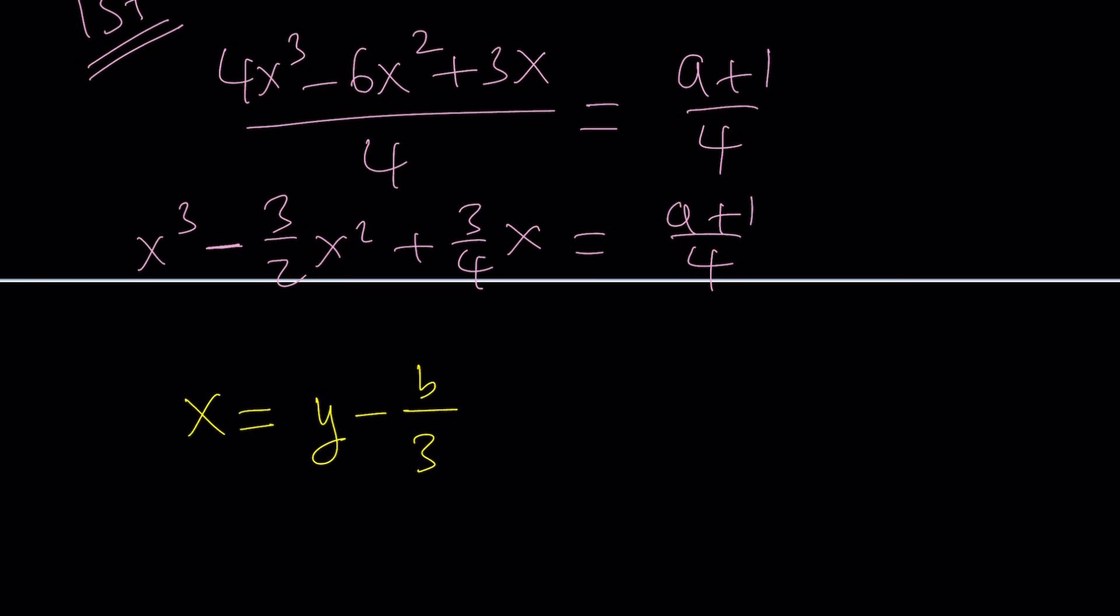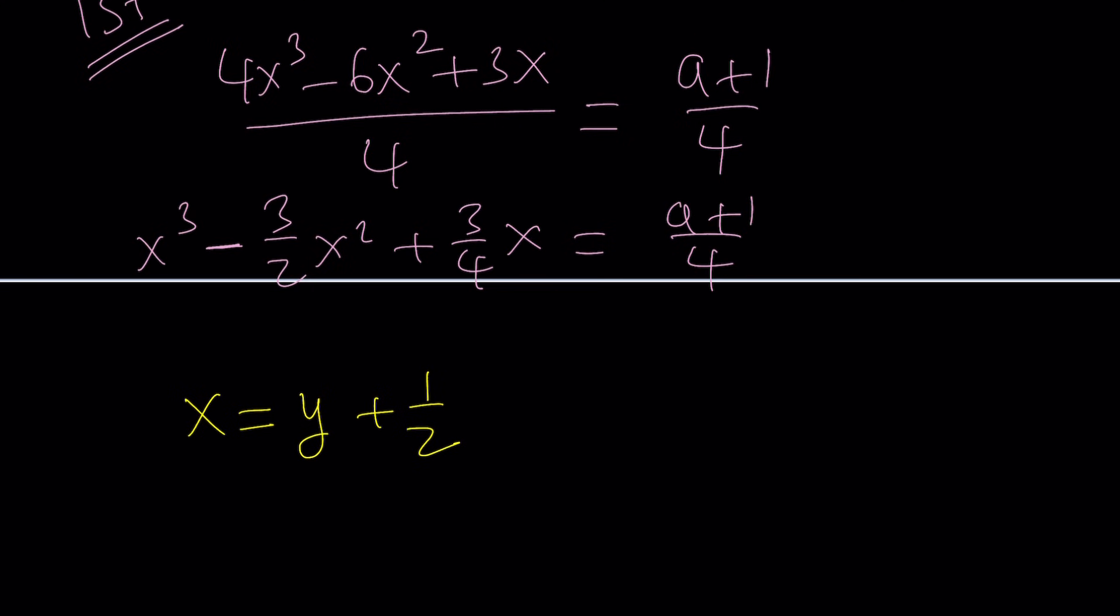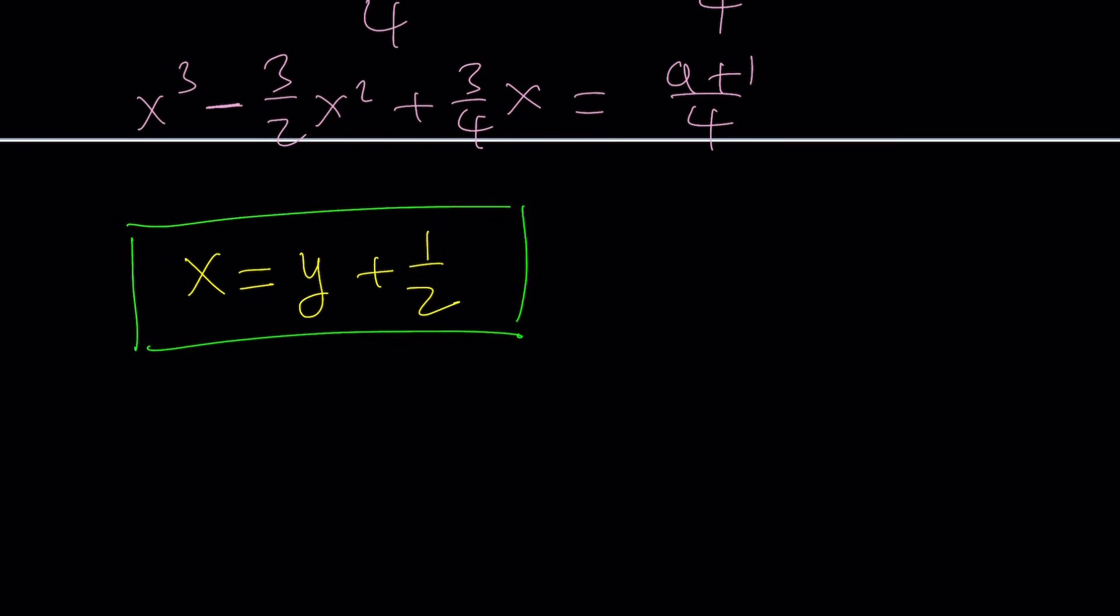So, b is -3/2. So, you need to divide that by three. So, what is 3/2 divided by three? That will be 1/2. To keep a long story short, you will replace x with y + 1/2. And that will do the trick. And the trick is to get rid of the quadratic term. In other words, when we do this replacement, we're going to get an equation with no y² in it.